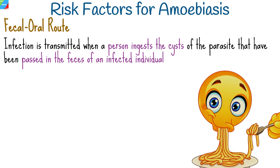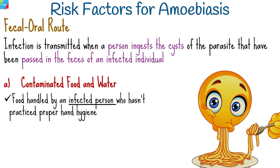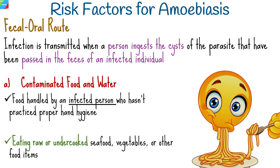Amoebiasis is most commonly spread through the fecal-oral route, meaning infection is transmitted when a person ingests cysts of the parasite passed in the feces of an infected individual. The most common way people contract amoebiasis is by consuming food or water contaminated with the cysts of Entamoeba histolytica. This can happen if food is prepared by an infected person who hasn't practiced proper hand hygiene. Eating raw or undercooked seafood, vegetables, or other food items contaminated with cysts can introduce the parasite into the digestive system.